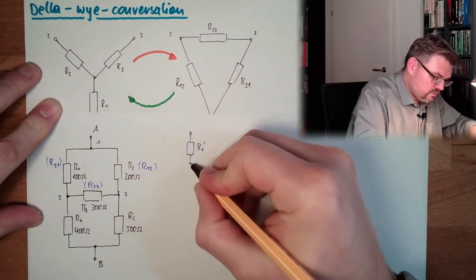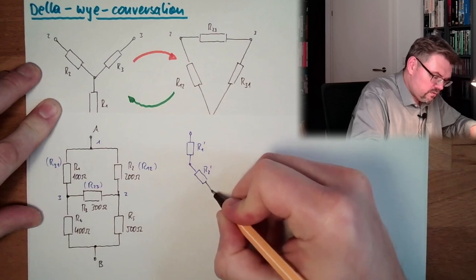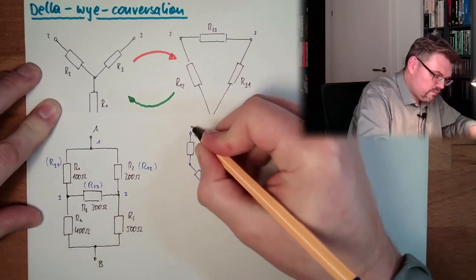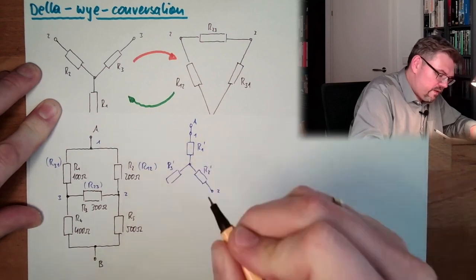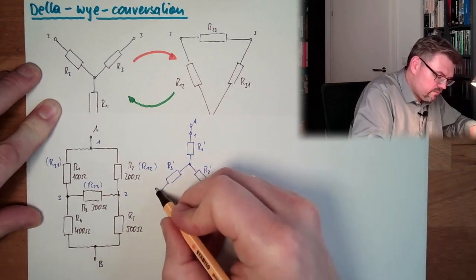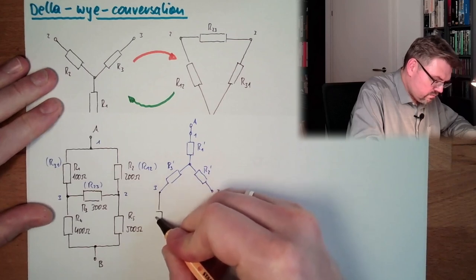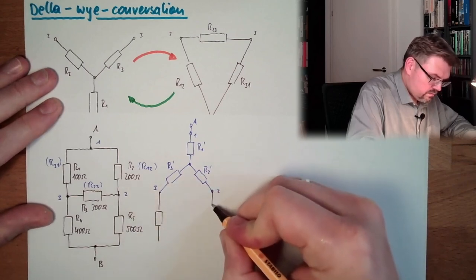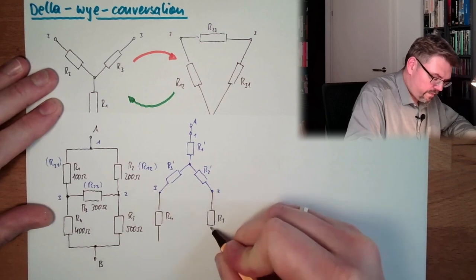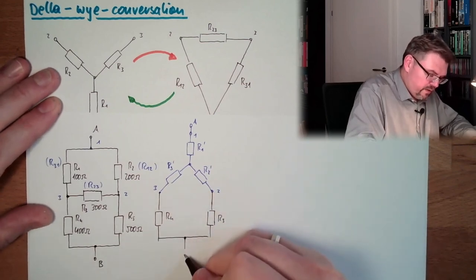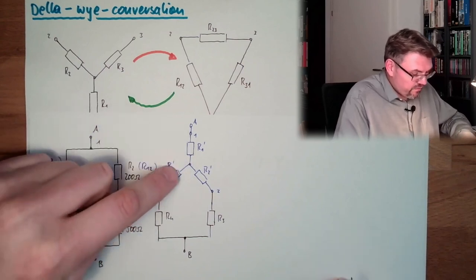Because if I would transform this to a Y, it would look like that: r1', r2', here we have point number 2, here we have point number 1, here we have A, r3', here we have point number 3. And the rest stays the same. You see? And now those are parallel.